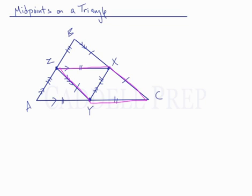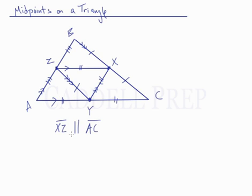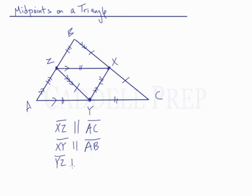So we have a lot of information here when we draw these midpoints. Line segment XZ is parallel to the entire base, line segment AC. Line segment XY is parallel to the entire side AB. And line segment YZ is parallel to the whole side BC.